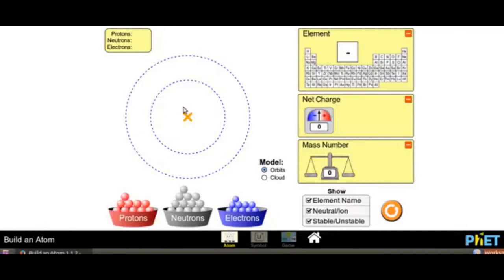Children, now look at the middle of the atom. Can you tell me what do you call the middle of atom? Children, we call it as nucleus. You can observe circles over here. So these circles are called as orbits.